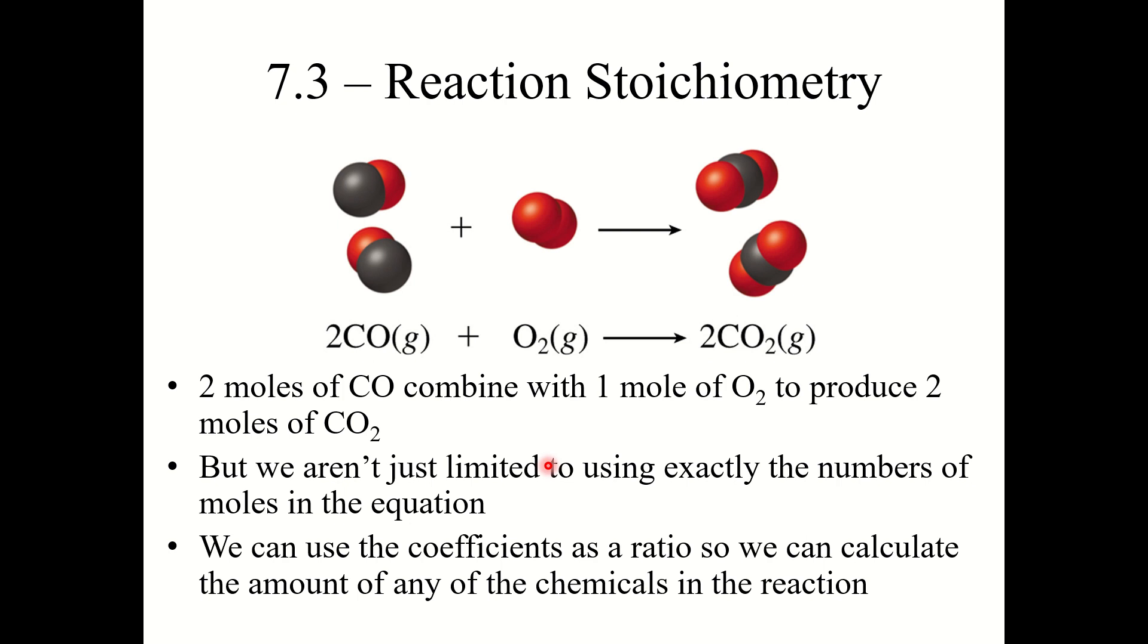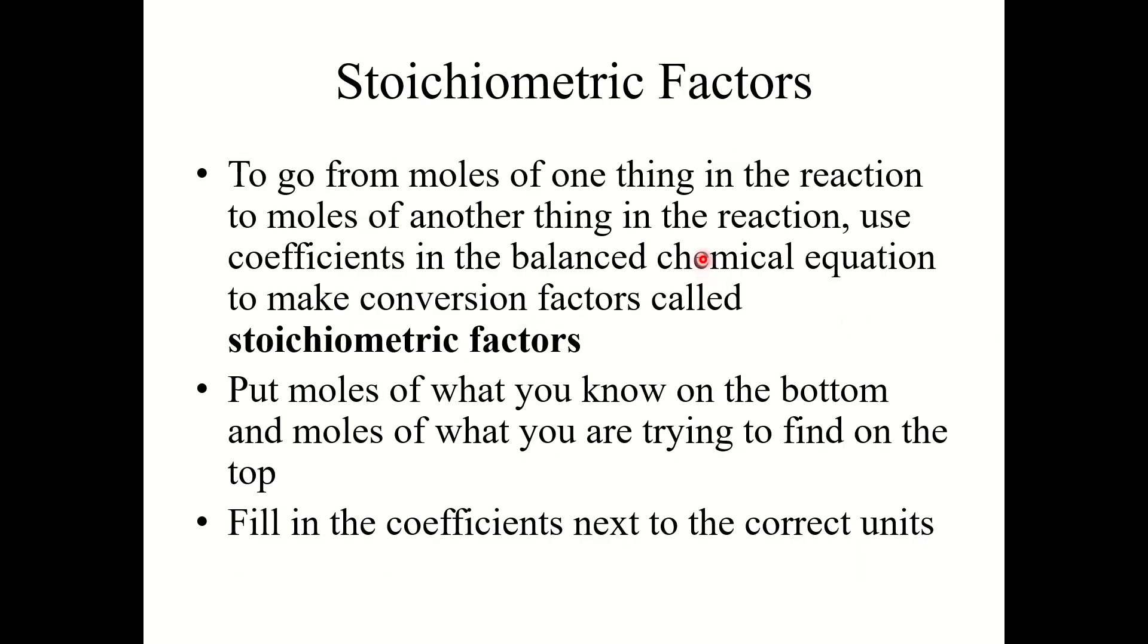The actual amounts themselves don't matter. Because of this, we can use these coefficients as a mathematical ratio so we can calculate the amount of any of the chemicals in the reaction. To go from moles of one thing in the reaction to moles of another thing in the reaction, use the coefficients in the balanced chemical equation to make conversion factors called stoichiometric factors.